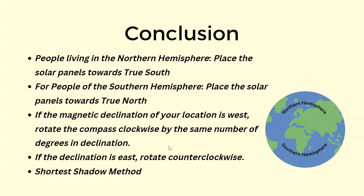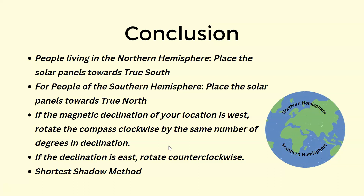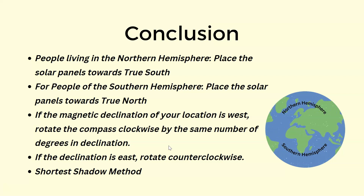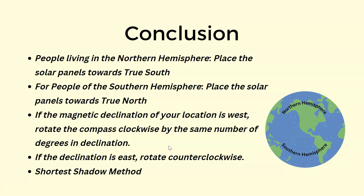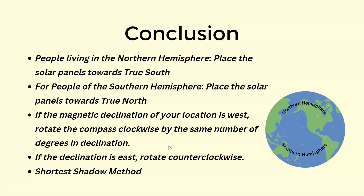To conclude: people living in the northern hemisphere should place their solar panels toward true south, and people in the southern hemisphere should place them toward true north. If the magnetic declination of a location is west, rotate the compass clockwise by the same number of degrees. If declination is east, rotate your compass counterclockwise by the same degrees. The shortest shadow method uses the principle that as the sun rises the shadow decreases, and at the shortest shadow point, joining the ends gives the true north-south line. These are the two methods.